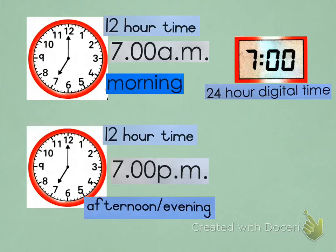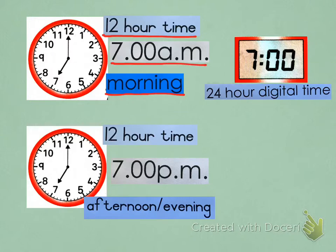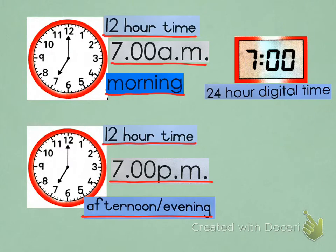But how do we write that down? If we are using our 12-hour time, remember if it's the morning we write it as 7 a.m. And if it's the evening or afternoon time we say 7 p.m. in the 12-hour time. But how do we convert to our 24-hour digital time?